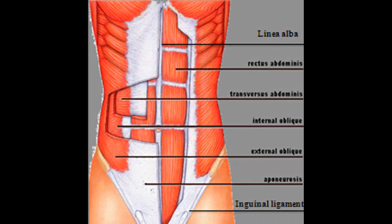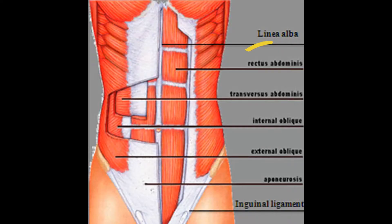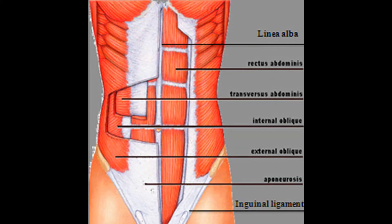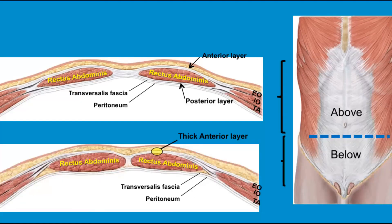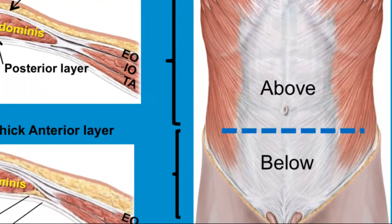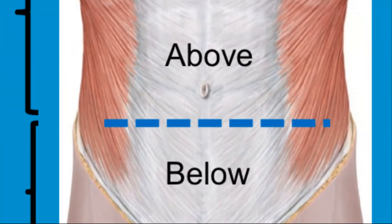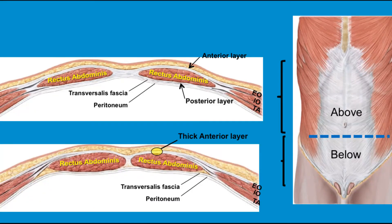Some other things present on the abdomen: you've got the linea alba right in the center, the rectus abdominis muscles, and we've spoken about the transversus abdominis, internal oblique, and external oblique. There is also something known as the arcuate line — it divides the top three-quarters of the abdomen from the last quarter.